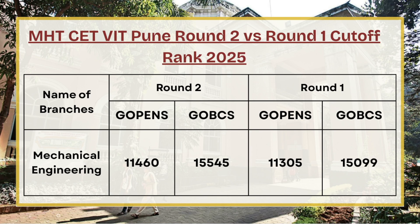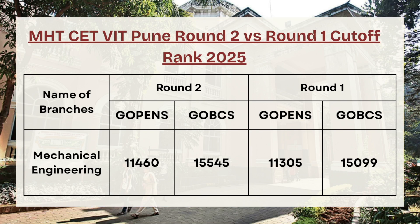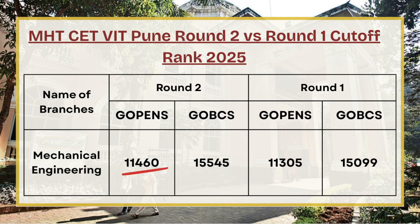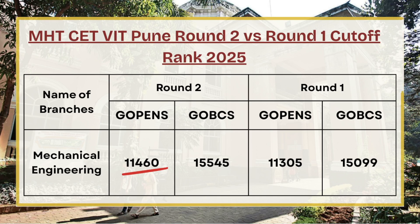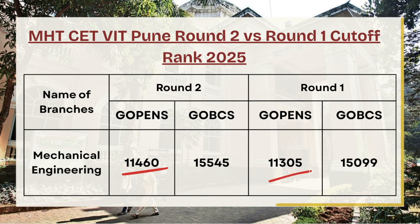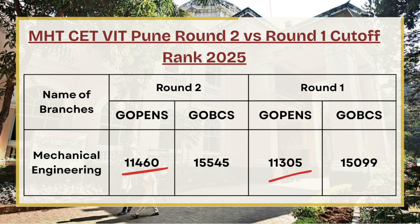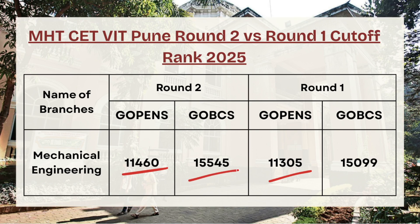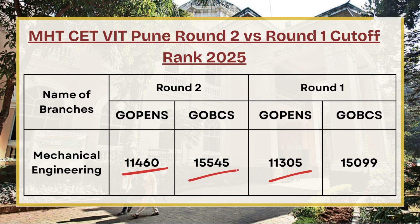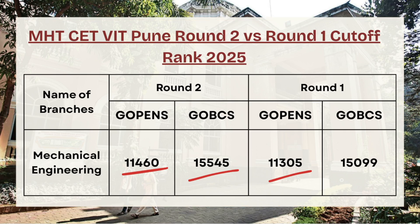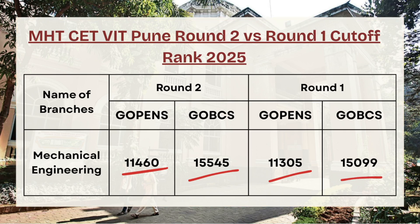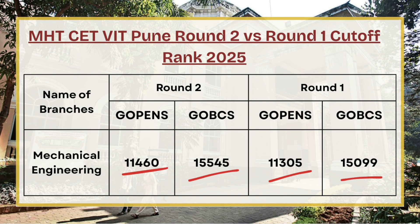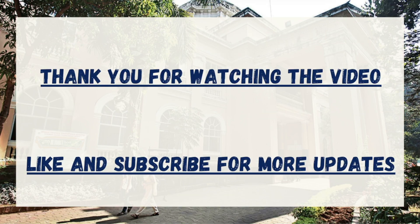Moving ahead, we have Mechanical Engineering. For G Open category, the cutoff rank was 11,460 for round two whereas in round one it was 11,305. For G OBC category, the cutoff rank was 15,545 for round two whereas in round one it was 15,099.